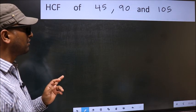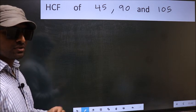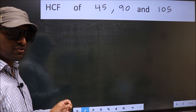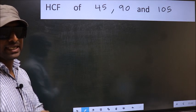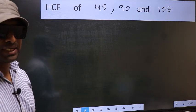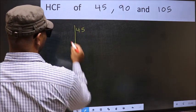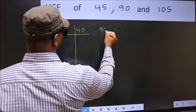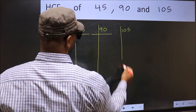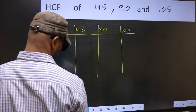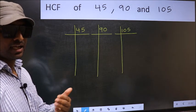HCF of 45, 90 and 105. To find the HCF, for that we should do the prime factorization of each number separately. What I mean is 45, 90, 105. This is your step 1.